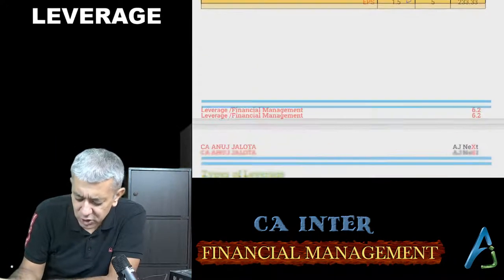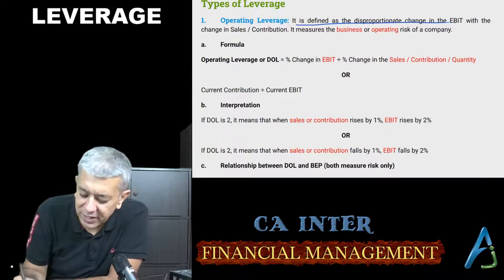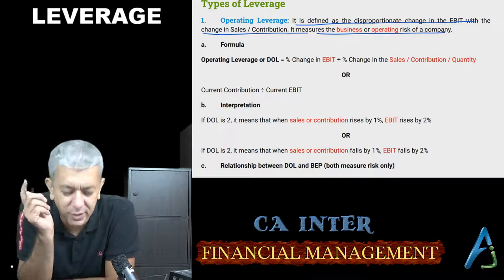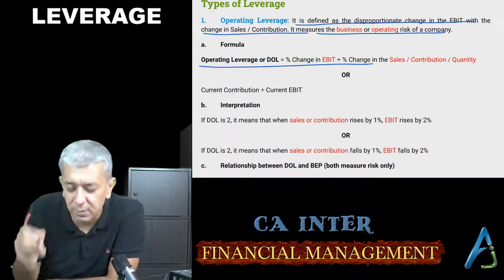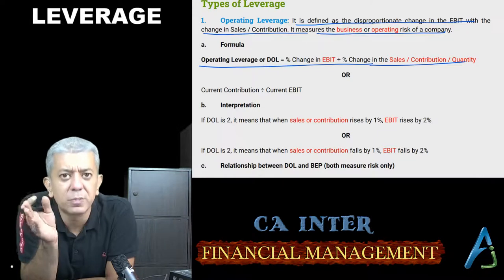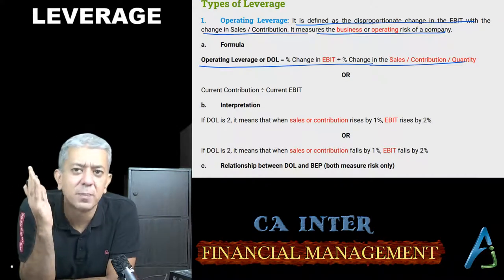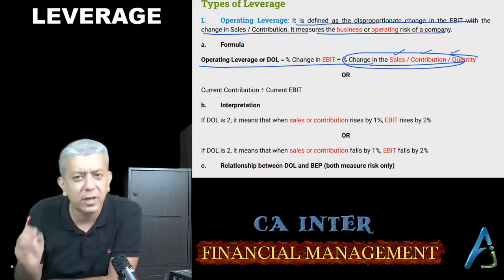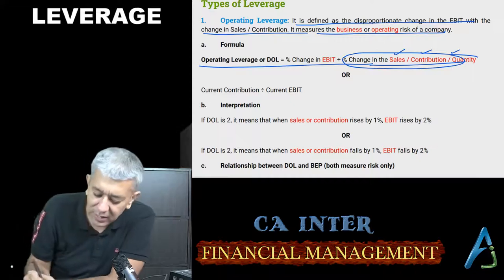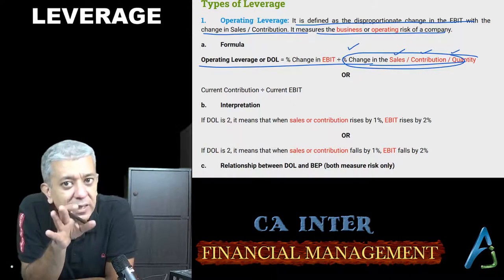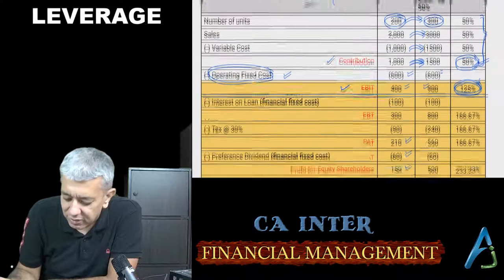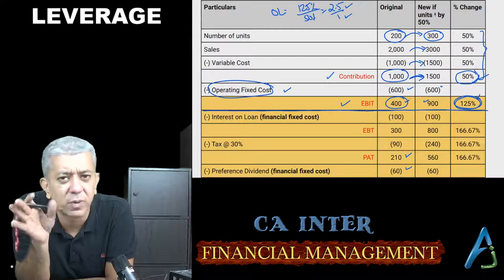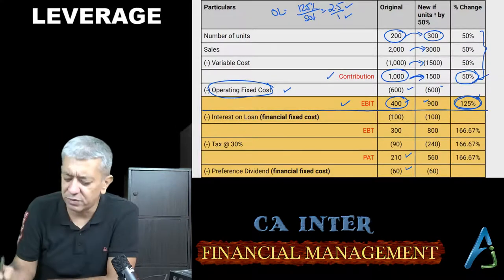Operating leverage is defined as a disproportionate change in EBIT with a change in sales and contribution. It measures business or operating risk of the company. Formula: percentage change in EBIT divided by percentage change in contribution (or quantity or sales — in this example, everything will be 50%). A shortcut formula was also derived: current contribution upon current EBIT. That will be 1000 upon 400, meaning 2.5.